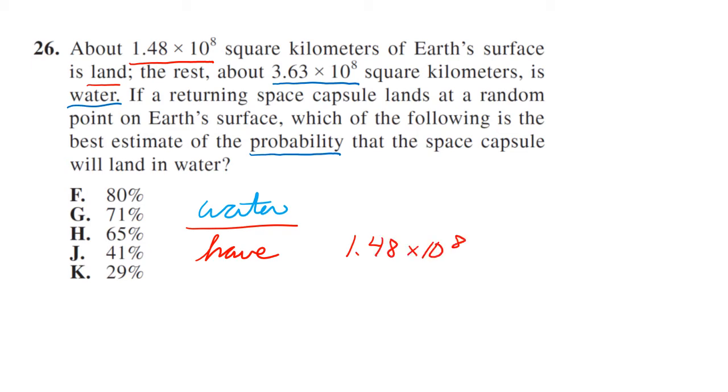Let's figure out what we have first. We have 1.48 times 10 to the 8 plus 3.63 times 10 to the 8. You can just put those in your calculator or you can convert them to non-scientific notation. What we want is water, so we have 3.63 times 10 to the 8. You can put them in your calculator just like that and hit divide and get it, or you can convert them.